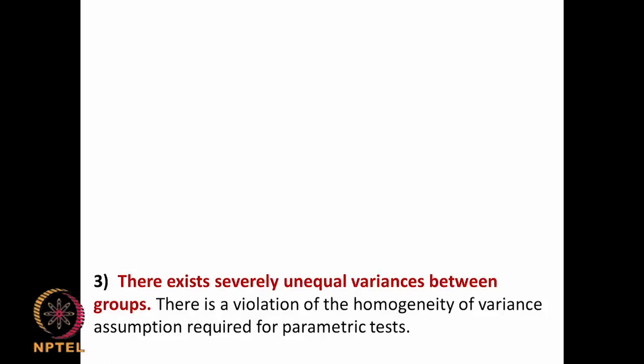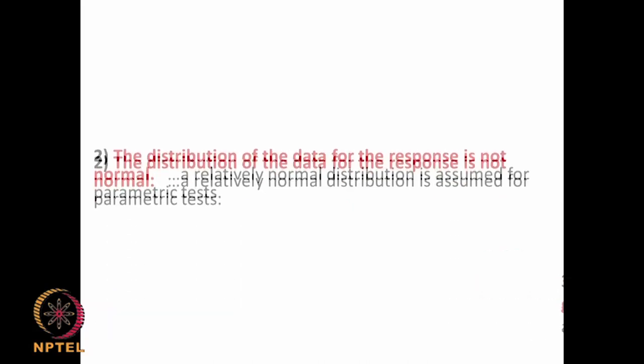Case one: there exist severely unequal variance between the groups, meaning they do not follow homogeneity of variance. Homogeneity of variance means we assume the variance is almost similar from each group. Case two: the distribution of the data for the response is not normal — that means they do not follow a normal distribution where mean, median, and mode are all the same.